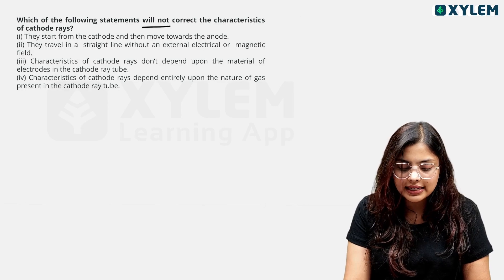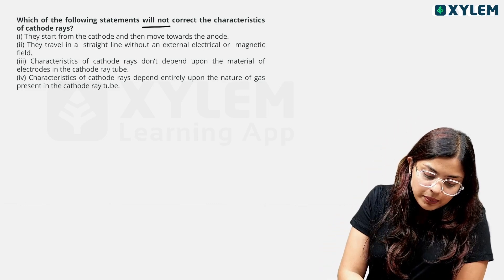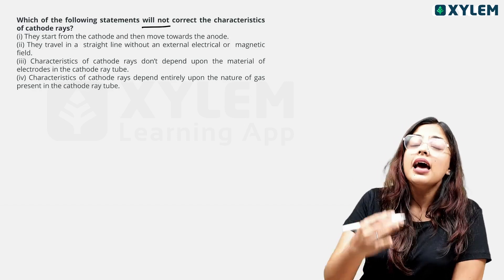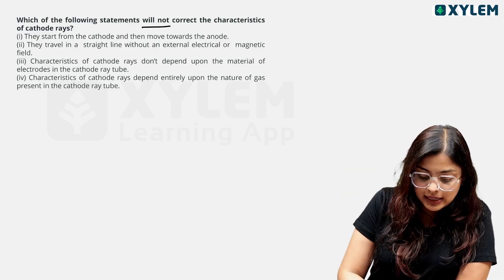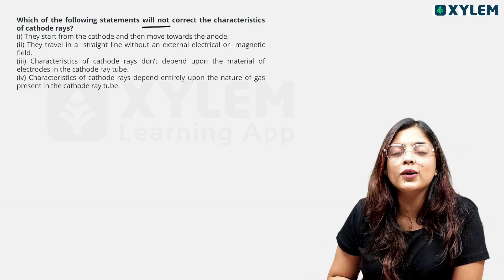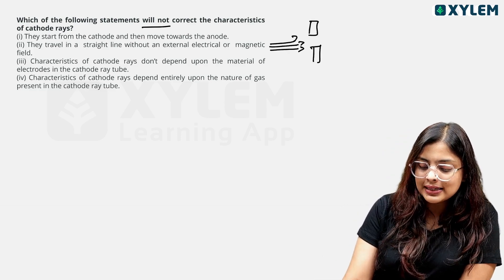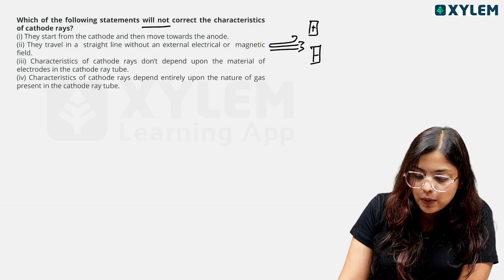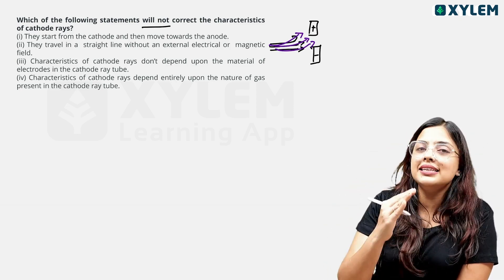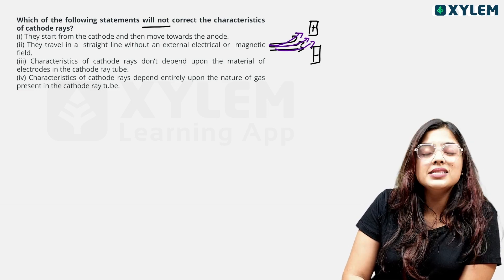Let's go to the next question: which of the following statements will not correctly describe the characteristics of cathode rays? Cathode rays start from the cathode and move towards the anode — that was discovered in J.J. Thomson's experiment. They travel in a straight line without an external electric or magnetic field. When we apply an electric or magnetic field, they deviate. They travel in straight lines — so this statement is correct. The characteristics of cathode rays do not depend upon the material of electrodes in the cathode ray tube.